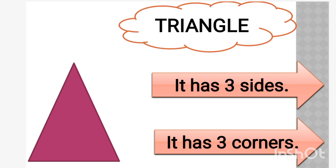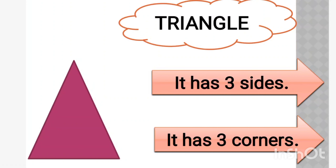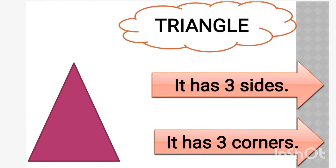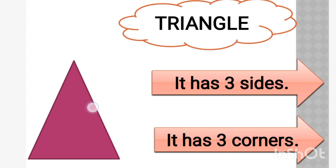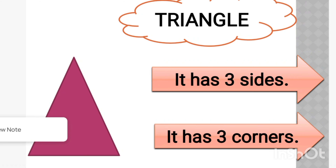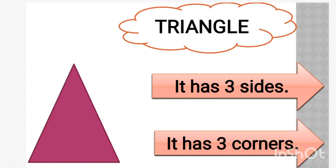Here we can see: one side, two sides, and the third side. So triangle has three sides — one, two, and three. And triangle has three corners also: one, two, and three. So triangle has three sides and three corners.